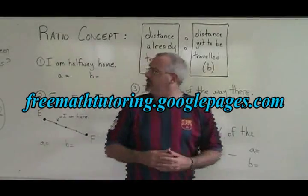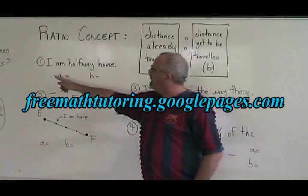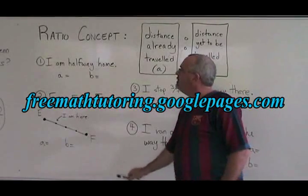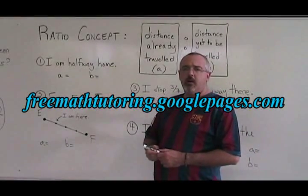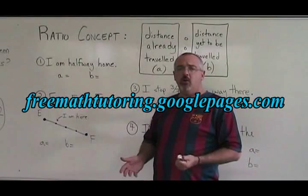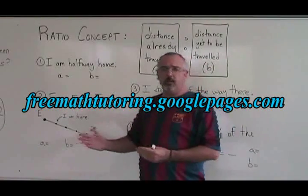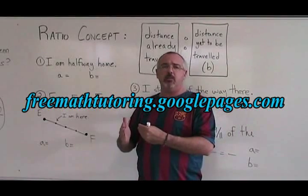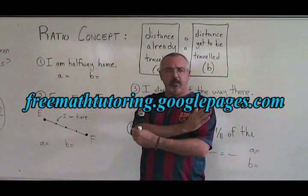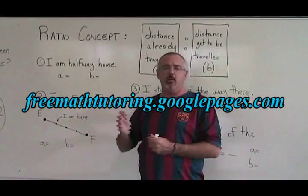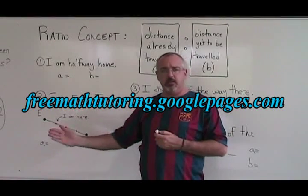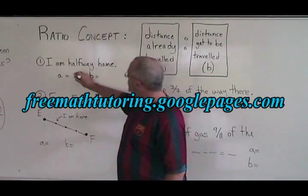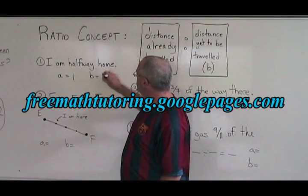Let's look at some more examples. In example 1, I am halfway home. What is my A and what is my B? Well, if I am halfway home, it means that I have traveled 1 half of the distance and I still have to travel 1 half of the distance. That means there is a 1 to 1 ratio between the distance I have already traveled and the distance I still have to cover. A equals 1 and B also equals 1.